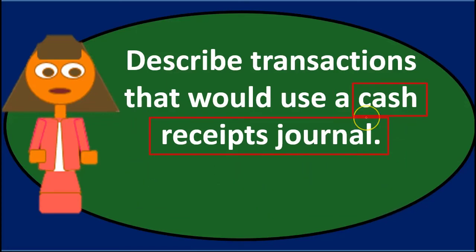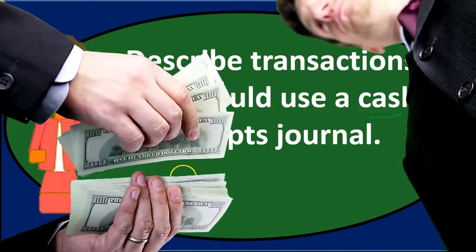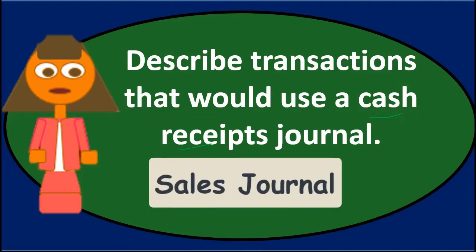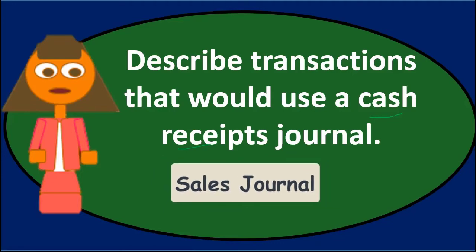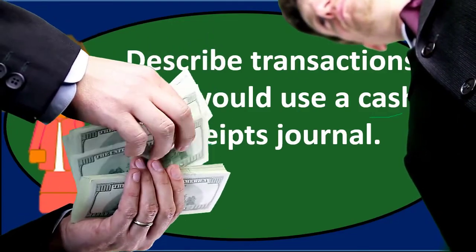The cash receipts journal groups transactions that are similar in that they all involve cash receipts. Now, this might seem broad, but the cash receipts journal is most effective when cash is received from similar transactions most of the time. The most confusing part is distinguishing it from the sales journal: the sales journal is really for sales on account — meaning we increase accounts receivable and sales — whereas the cash receipts journal is used any time we receive cash.